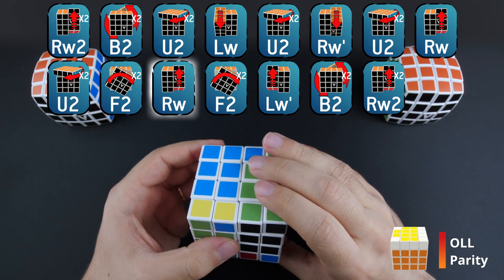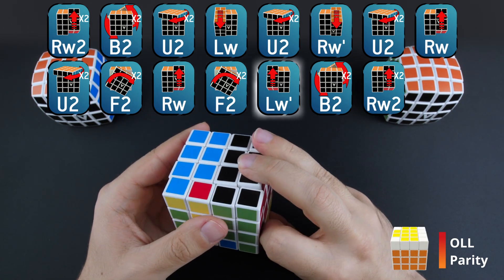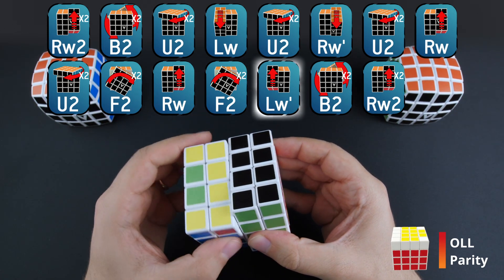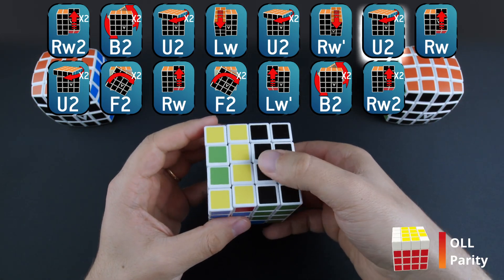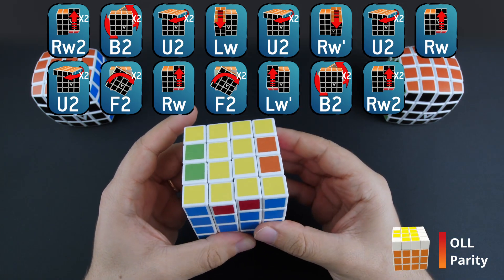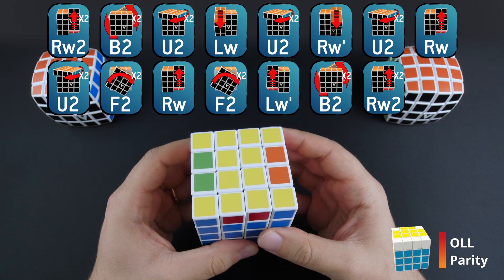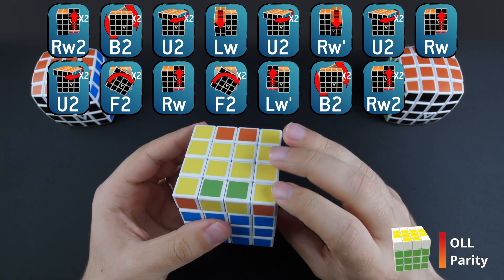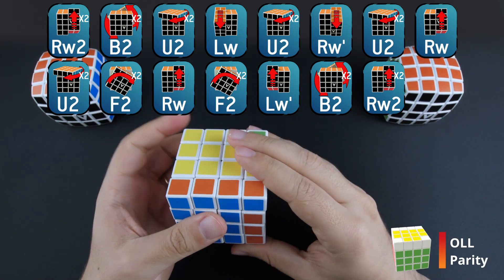F2, LW inverted, B2, RW2. Most people memorize this algorithm only after playing with the puzzle for a long time, so we suggest that you just write it down for now. Now you can finish the top layer until the last step.